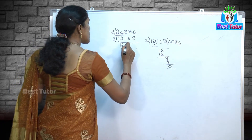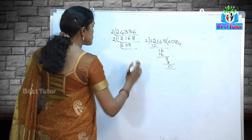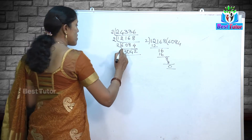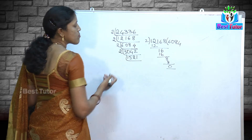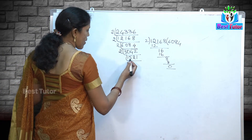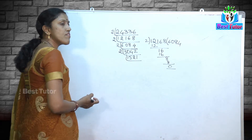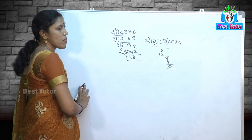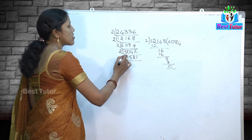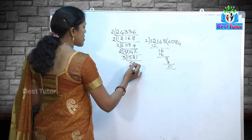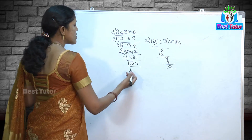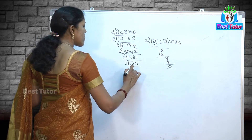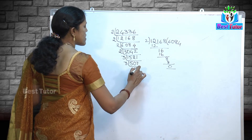Continuing division of 24336: 3042 divided by 2 gives 1521. Now 1521 is no longer divisible by 2. Testing for 3: 5 plus 1 is 6, plus 2 is 8, plus 1 is 9. The sum of all digits is 9, which is divisible by 3, so 1521 is divisible by 3. 1521 divided by 3 gives 507. Is 507 divisible by 3? 5 plus 7 is 12, yes. 507 divided by 3 gives 169.